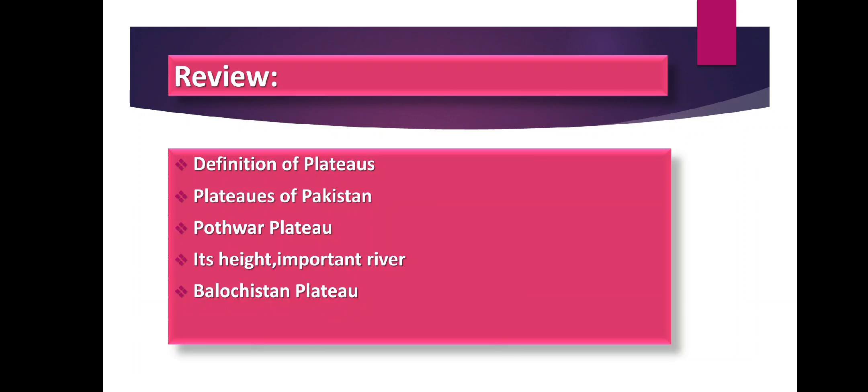For Balochistan Plateau, we discussed that it lies to the west of Koh-e-Sulaiman and Kirthar Range. Its height is 900 meters. Balochistan Plateau is an arid region with very low rainfall, giving it desert-like characteristics. We discussed the important mountain ranges: Toba Kakar and Chagai are situated in the western part. Salt lakes are found here, and the famous one is Hamoun-e-Mashkhel. The important rivers of Balochistan Plateau are Gomal, Zob, and Hingul.